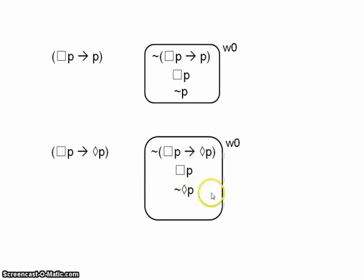And in this one, we can go a bit further, because we can convert not possibly p into necessarily not p. But, again, that's all we can do. And remember, these two here aren't contradictions. You'd need to have, you'd only have a contradiction if the negation was on the other side of this necessarily.